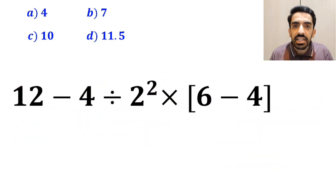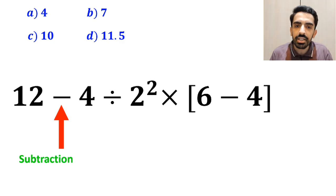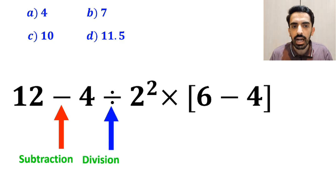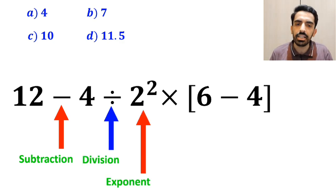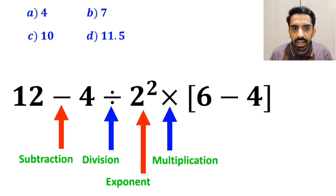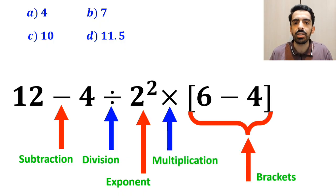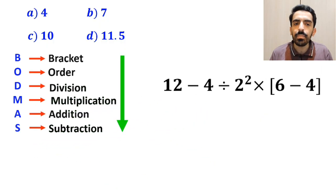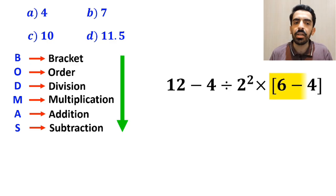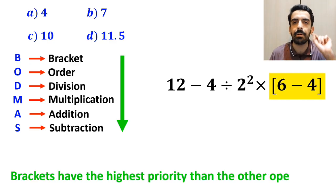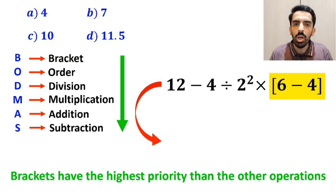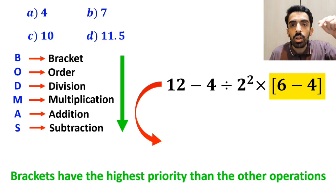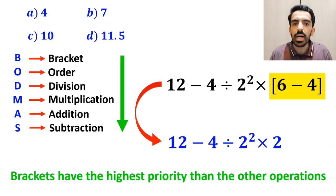As you can see in the image, in this expression, first we have a subtraction sign, then a division sign, and after that we have an exponent, then a multiplication, and finally brackets. According to the BODMAS rule, first we should start with the brackets, because brackets have the highest priority over the other operations. So we rewrite this expression as 12 minus 4 divided by 2 squared times 2.